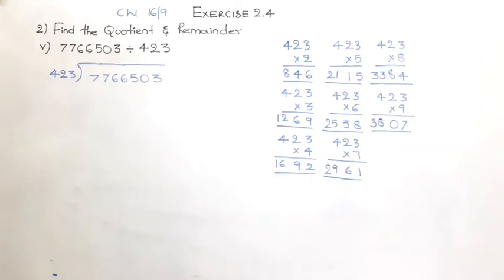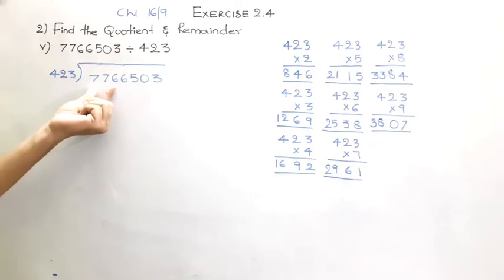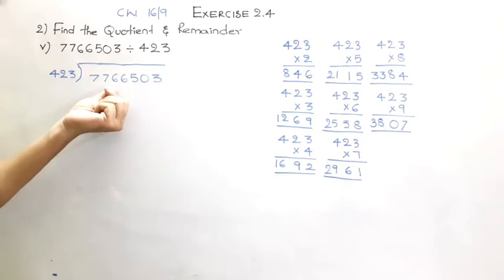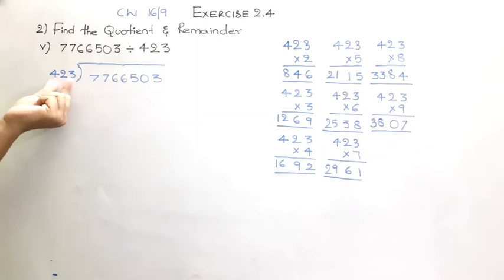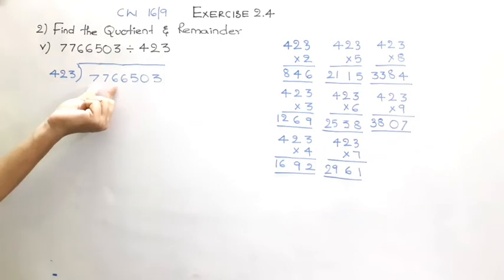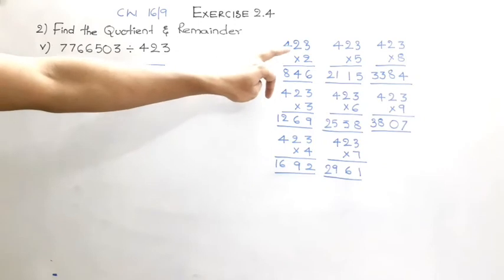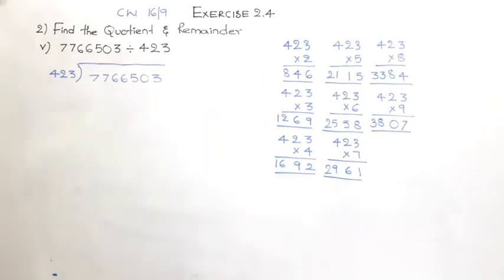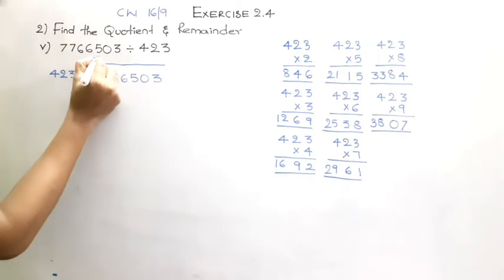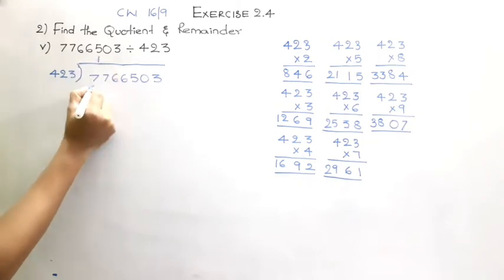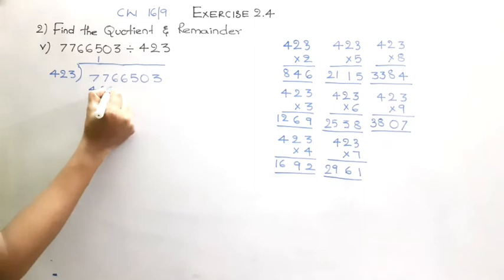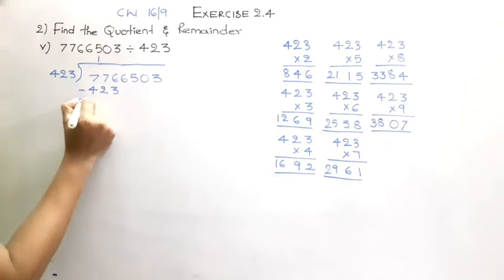The first three digits of the dividend are 776, which is very much greater than 423, so we can take the first three digits for the division. 423 times 2 is 846, so we are going with one time. 423 times 1 is 423. Upon subtraction: